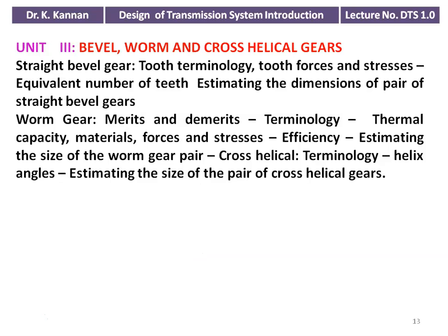Unit 3 covers bevel gear, worm gear, and cross helical gear. For straight bevel gear: tooth terminology, tooth forces and stresses, equivalent number of teeth, and estimating dimensions of a pair of straight bevel gears. For worm gear: merits and demerits, terminology, thermal capacity, material, forces and stresses, efficiency, and estimating the size of the worm gear pair. Then cross helical gear: terminology, helix angle, and estimating the size of the pair of cross helical gears.